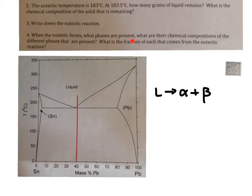So we know alpha and beta are the phases. What are their chemical compositions of these different phases? And then what is the fraction of each that comes from the eutectic reaction?